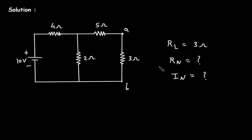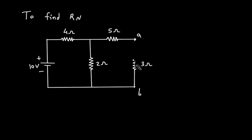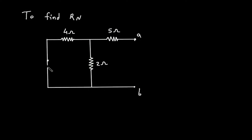So first we will find Rn. To find Rn, we have to turn off all the independent sources and remove this RL. So first we will remove this RL and turn off this voltage source. This is the independent voltage source. So when we turn off the independent voltage source, it will be short circuited. And this will be Rn. Now here we can see this 5 ohm is in series with 4 ohm parallel with 2 ohm.